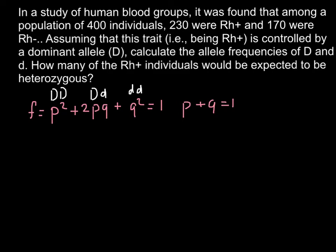p stands for the capital D or dominant allele, and q stands for the recessive allele. Let's now analyze the problem itself. We have 400 individuals tested for this Rh-positive or negative trait, and 170 were Rh-negative. That means this group is dd or homozygous recessive, and the number is 170.